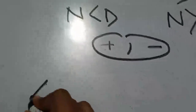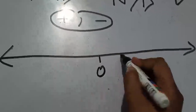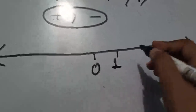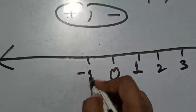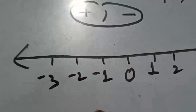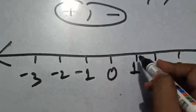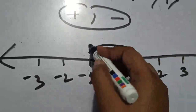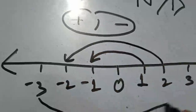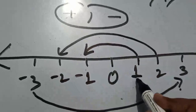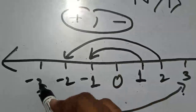Now, in the number line, as you have studied in integers, the value on the right-hand side is positive and the left-hand side is negative. So 1 corresponds to minus 1, 2 to minus 2, 3 to minus 3. If we have to find positive or negative values, we know that negative numbers lie in the left direction.